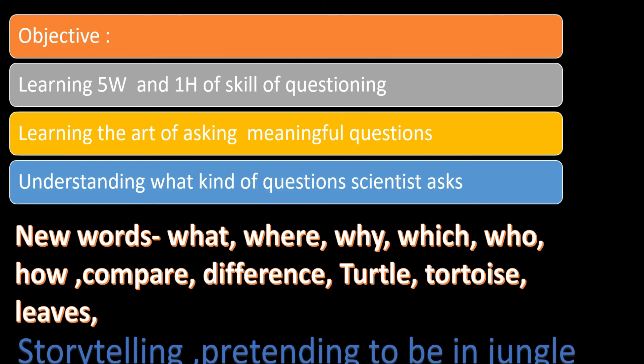In today's video we have learned about the five W's and one H technique of asking questions, learning the art of asking questions, understanding what kind of questions scientists ask, and the new words we discussed: what, where, why, which, who, how, compare, difference, turtle, tortoise, leaves. Many words, but the main concept is to learn to ask questions. We have tried our best to go deeper into the variations in the forest and in the animals.